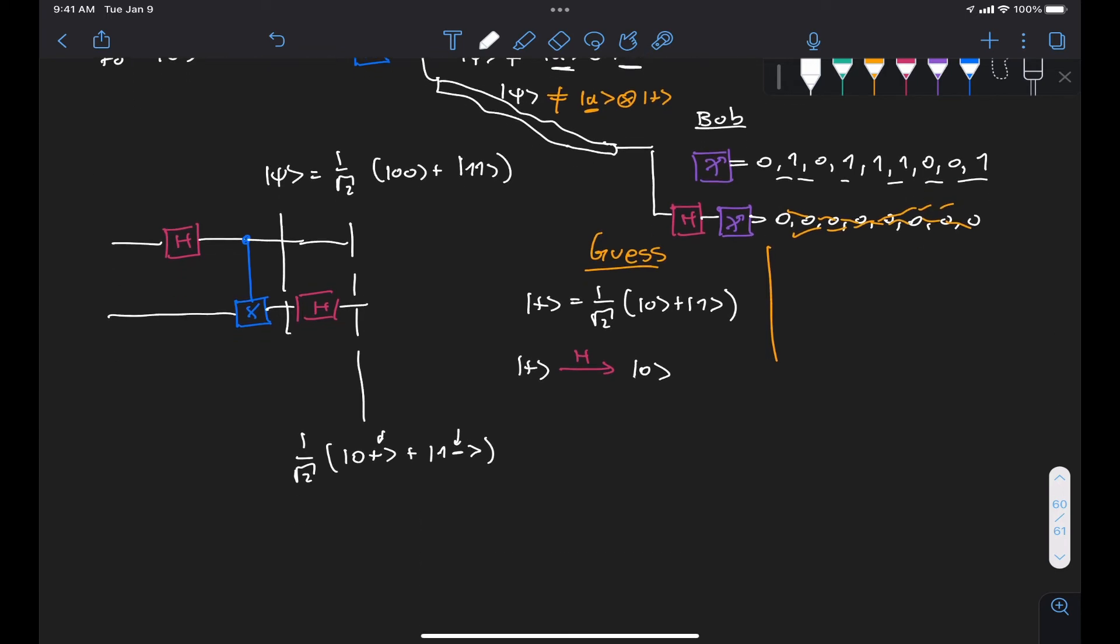And turning this into the computational basis, we get 1 over 2, |00⟩ plus |01⟩ plus |10⟩ minus |11⟩. And we can see here that just by looking at Bob's qubit, we see that he has state zero with 50% probability and state one with 50% probability. So he definitely does not have the state plus.